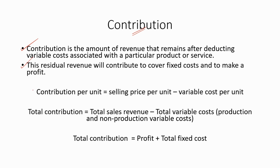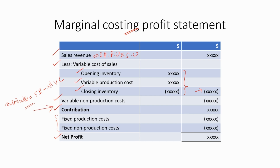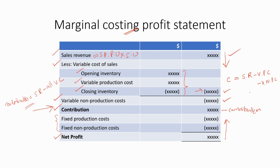Let's go back to the profit statement. We can calculate the contribution by two methods. The first method is calculating forward: contribution equals sales revenue minus variable production cost minus variable non-production cost. We can simply say contribution is equal to sales revenue minus all the variable costs, because both production and non-production variable costs are considered under contribution.